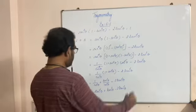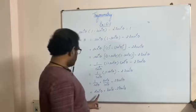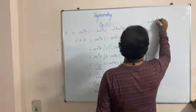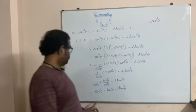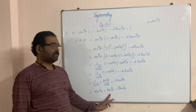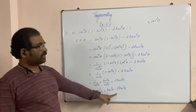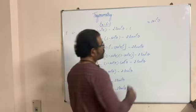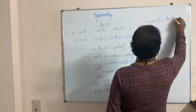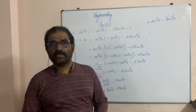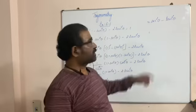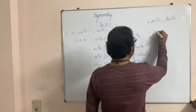That equals sec²θ plus tan²θ minus 2tan²θ, which simplifies to sec²θ minus tan²θ. And sec²θ minus tan²θ is equal to 1. We have got the RHS.